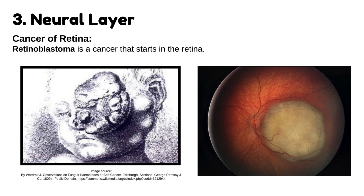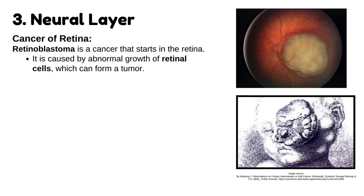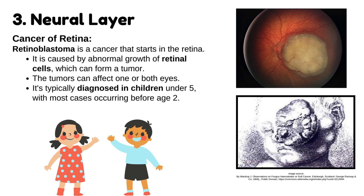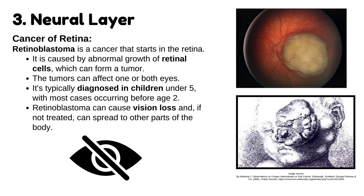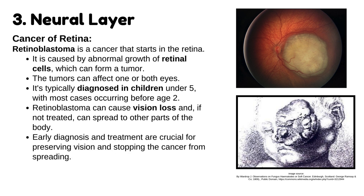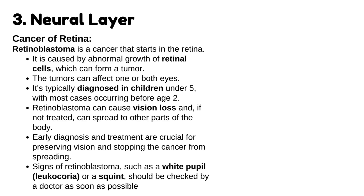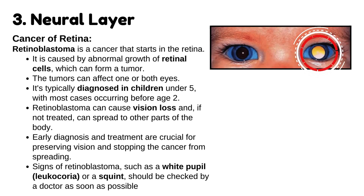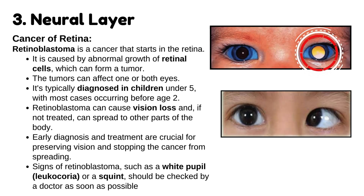Retinoblastoma is a cancer that starts in the retina, caused by abnormal growth of retinal cells, which can form a tumor. The tumors can affect one or both eyes. It's typically diagnosed in children under 5, with most cases occurring before age 2. Retinoblastoma can cause vision loss and, if not treated, can spread to other parts of the body. Early diagnosis and treatment are crucial for preserving vision and stopping the cancer from spreading. Signs of retinoblastoma, such as a white pupil (leukocoria) or a squint, should be checked by a doctor as soon as possible.